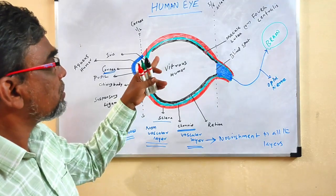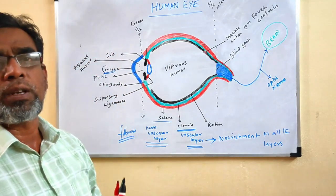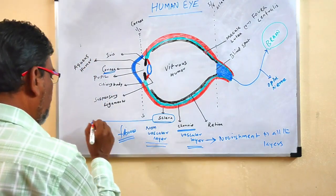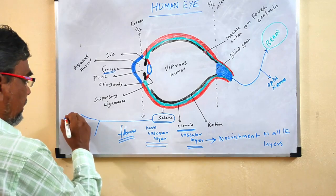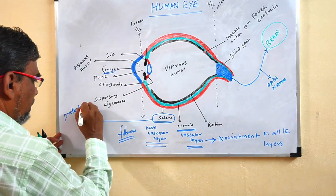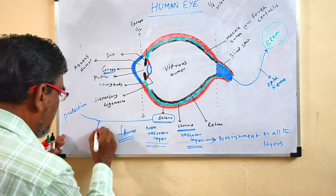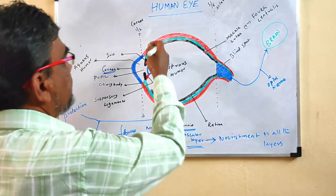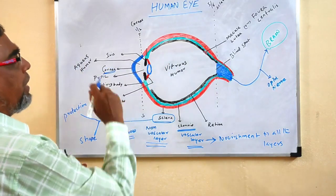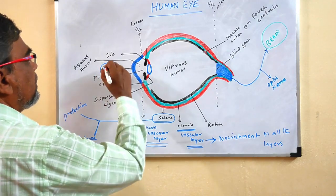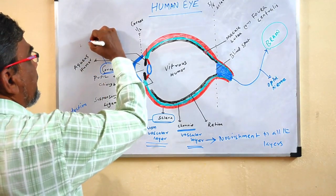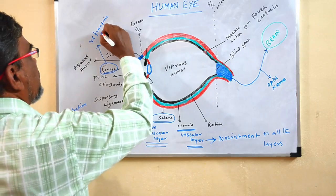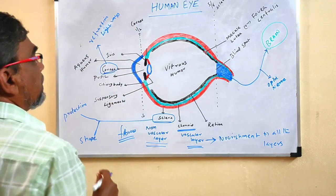The sclera, the first layer, is non-vascular and it gives protection to the eye. It also gives a permanent shape to the eye. So the sclera performs two functions: it gives protection and it gives permanent shape. The anterior part of the sclera is modified into the cornea, whose function is to help in the refraction of light rays.